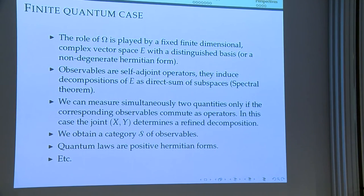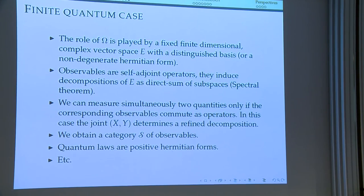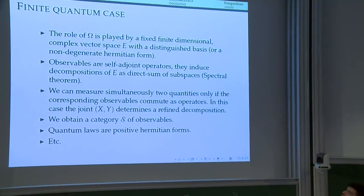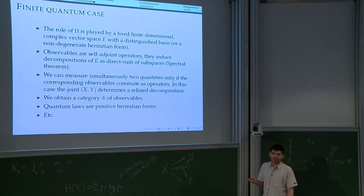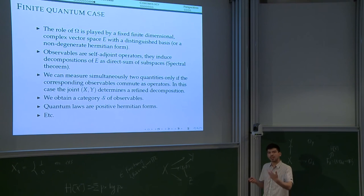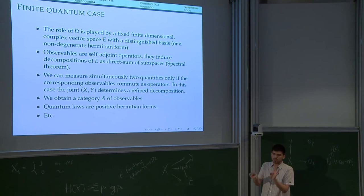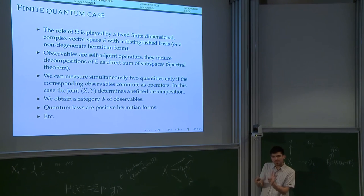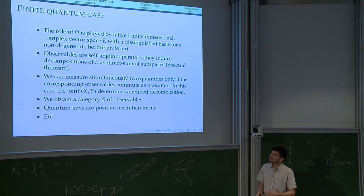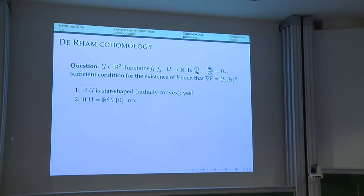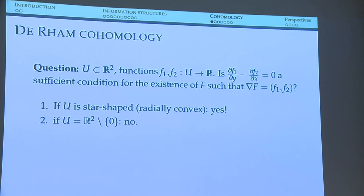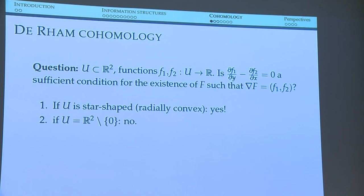One feature is that all this can be extended quite naturally to the quantum case. Instead of omega, you take a finite-dimensional complex vector space, and observables are self-adjoint operators. There is also a notion of refinement, because each observable defines a decomposition of the space as a direct sum of subspaces. If you have a finer decomposition that refines another, you put an arrow. The construction is very universal. That concludes the information and probability part, and now we want to go to the algebra and geometry side.